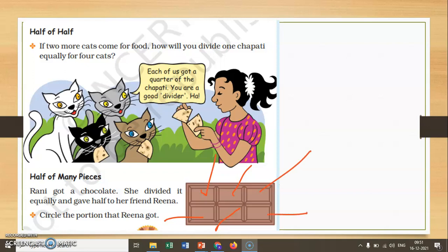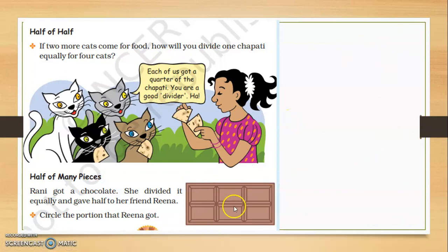Rani, Reena. So with this, three pieces of chocolate Rani gets and three pieces of chocolate Reena gets. If I ask you to draw it, would you be able to draw it? Yes, you will be able to draw it.